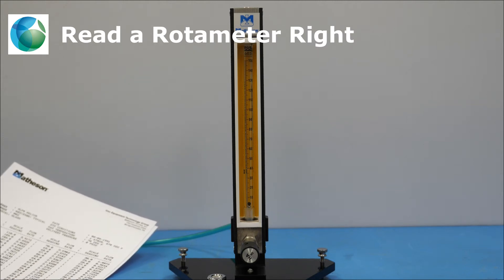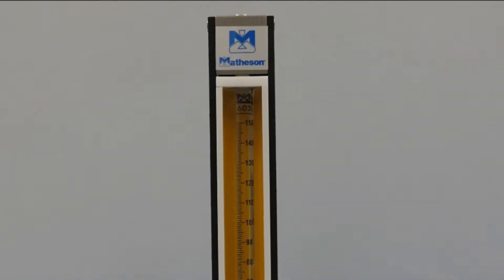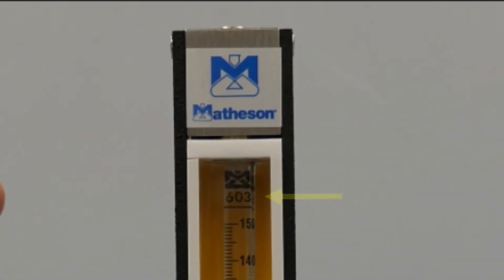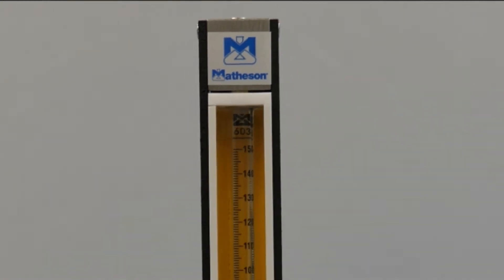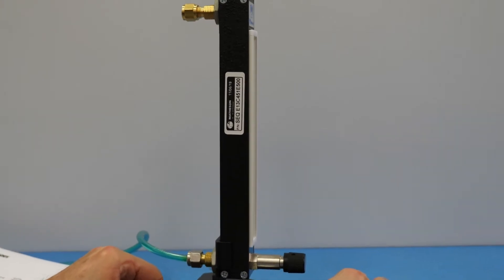Hello, in this video I'd like to demonstrate for you how to operate and read an FM 1050 series rotometer. In this case we have a 603 tube in the meter which corresponds with E500 and its part number.